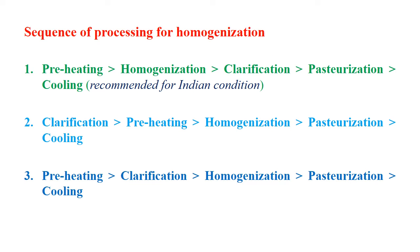Here we will see the sequence of processing for homogenization. There are different combinations for the sequence of processing. Option one: first preheating, then homogenization, then clarification, then pasteurization and cooling — this is recommended for Indian conditions. Option two: first clarification, then preheating, then homogenization, then pasteurization and cooling. Option three: preheating, clarification, homogenization, pasteurization and cooling. These are the three sequences which can be followed for homogenization.